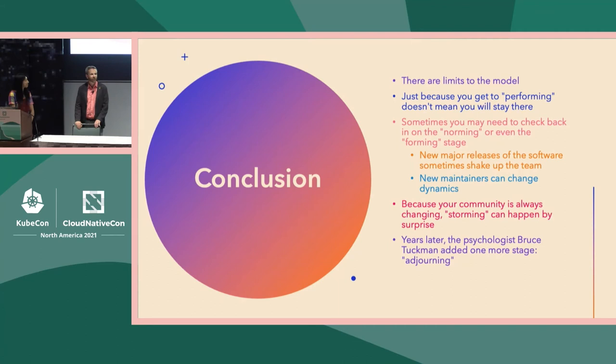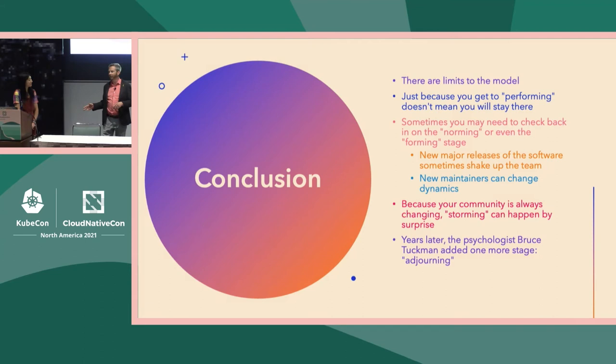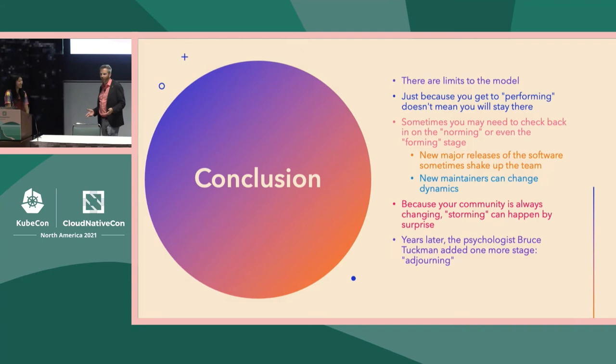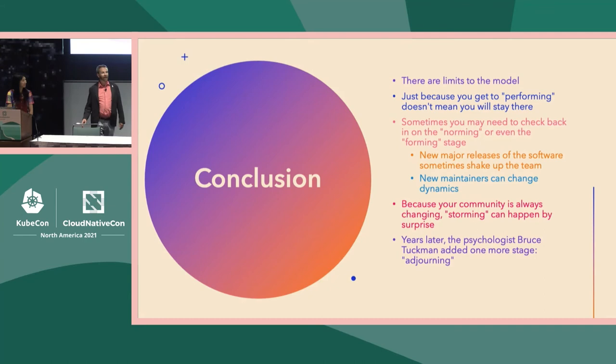Many years after he wrote his first paper on forming, storming, norming, and performing, Tuckman realized he might have missed something. He came back and offered a fifth step he called adjourning — when maintainership quiets down, the project is no longer quite as relevant, and it's time to just say, 'Hey, we did a good job, we worked really hard on this, and we're kind of done.' That too is a natural phase of many open source projects — and also the natural phase of a conference talk. So if you have any questions, otherwise we too will adjourn.